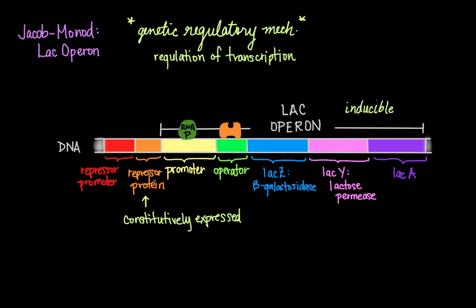When glucose is not readily available and lactose is present as an alternate energy source, things start to change. Lactose passively enters the cell at a slow rate, and a metabolite of lactose called allolactose binds to the repressor, altering the conformation of the repressor protein and causing it to loosen up and fall off the operator. With the repressor gone, RNA polymerase is free to transcribe all three genes, leading to higher levels of the encoded proteins.